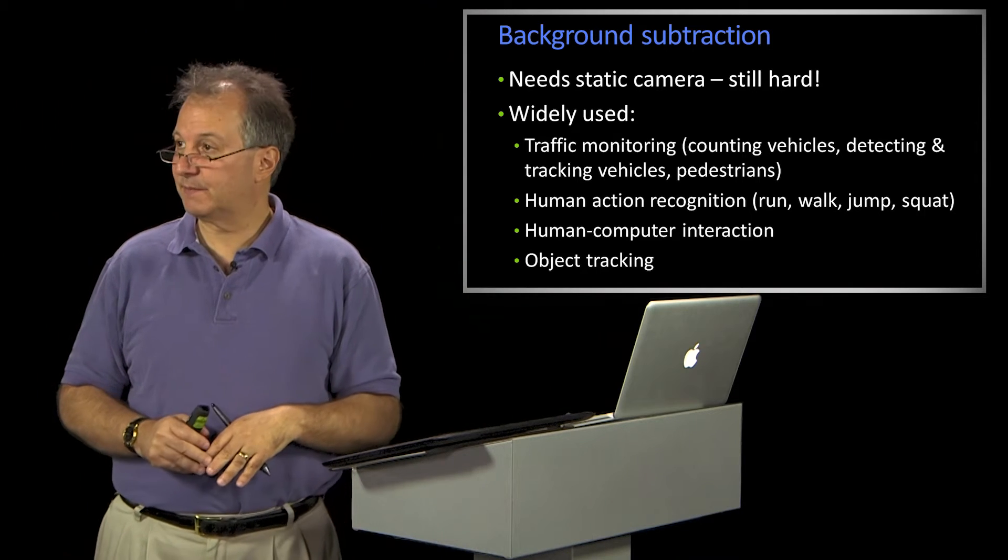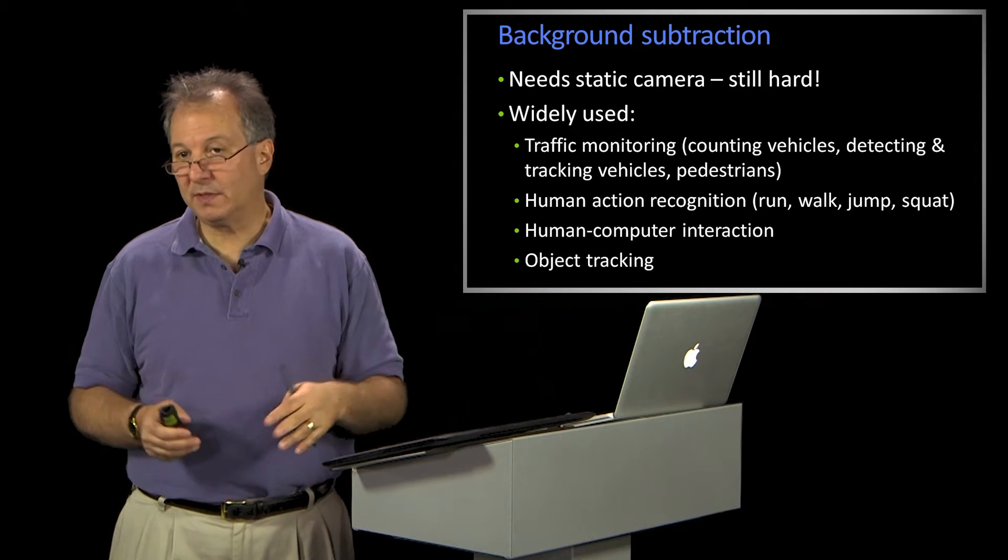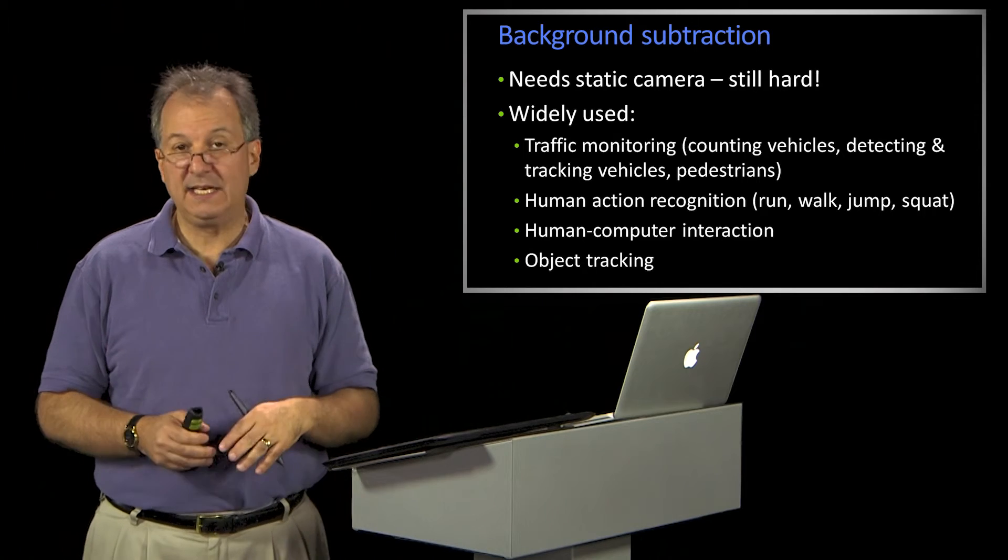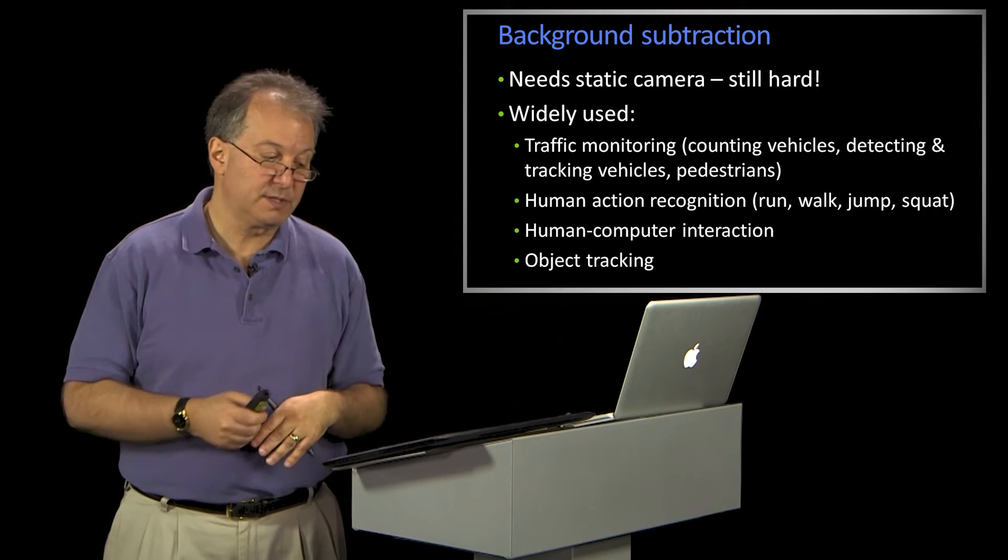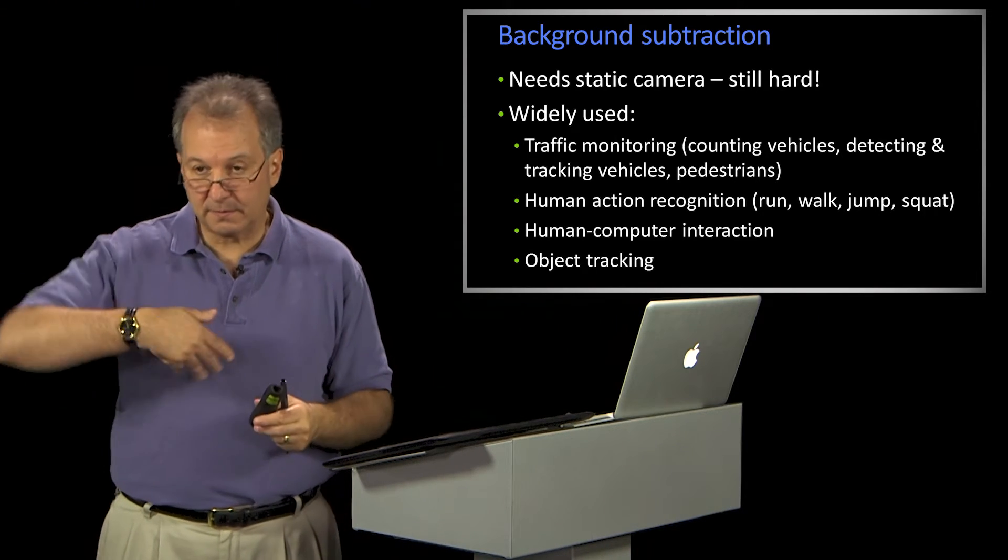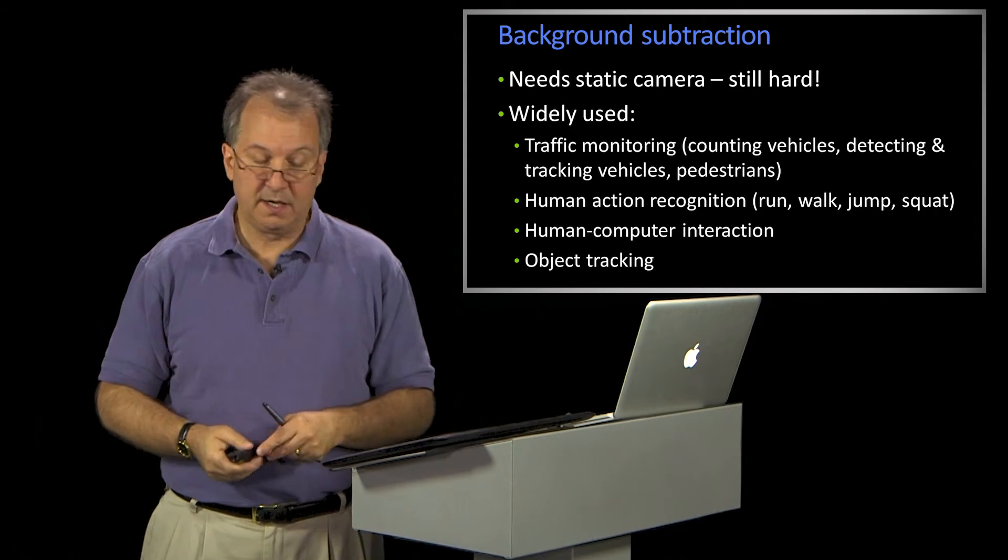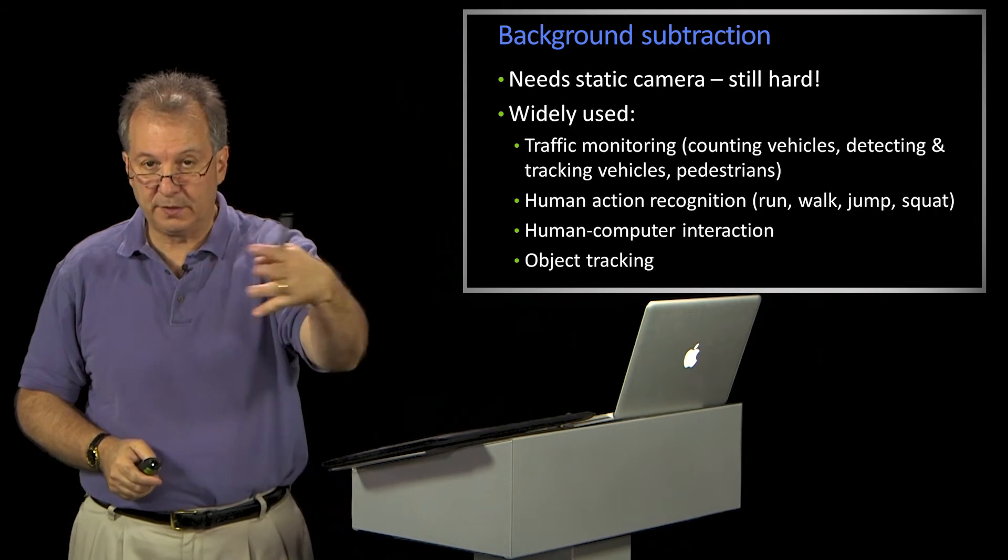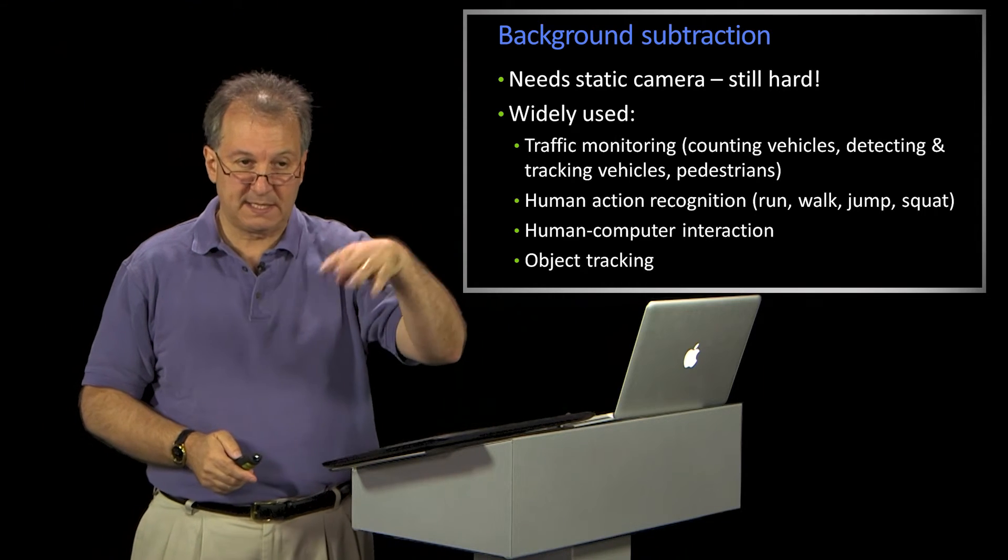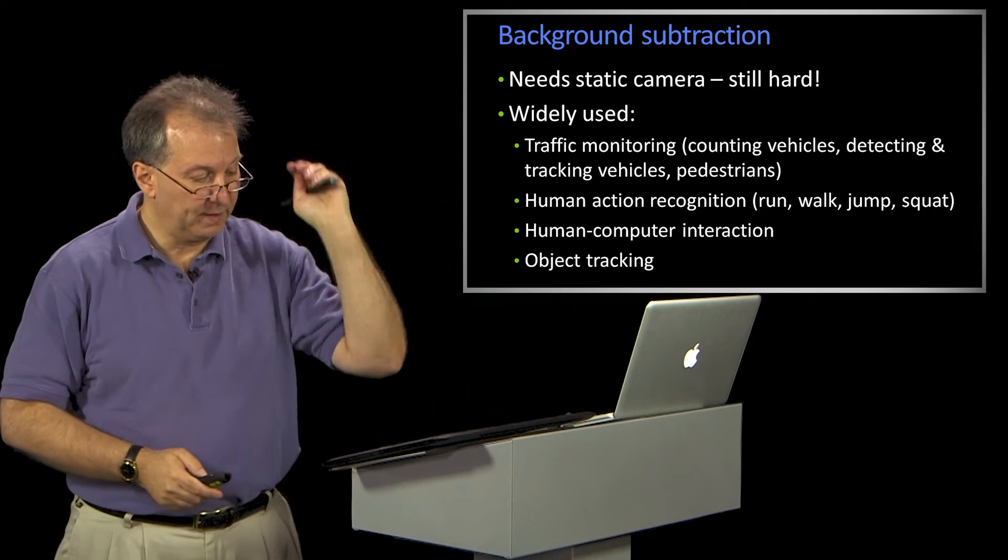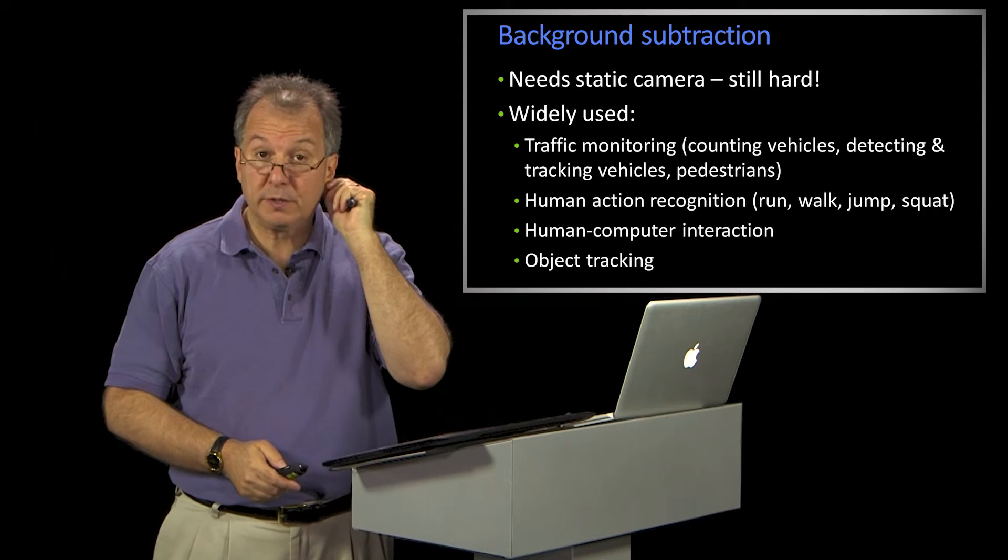Background subtraction, as simple and overly simplistic as it is, is used a lot in commercial systems: traffic monitoring, where they're counting cars or monitoring other things going on; various human action recognition, where you have people coming by and you want to be able to say something about walking, running, whatever.